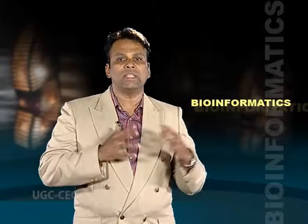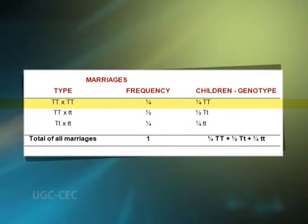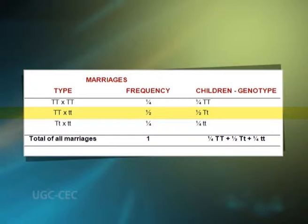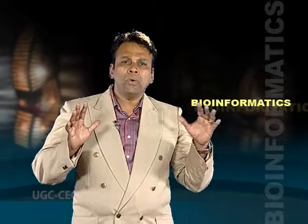The marriages and the children in the F1 generation can be represented as follows. In the first type of marriage between homozygous taster and homozygous taster, the genotype frequency of children is 25 percent homozygous taster. In the second type between homozygous taster and homozygous non-taster, the frequency of children is 50 percent heterozygous taster. In the third type between homozygous tasters and homozygous non-tasters, the genotype frequency is 25 percent homozygous non-taster. Thus, in the population, random mating leads to three possible genotypes in the ratio 1:2:1.